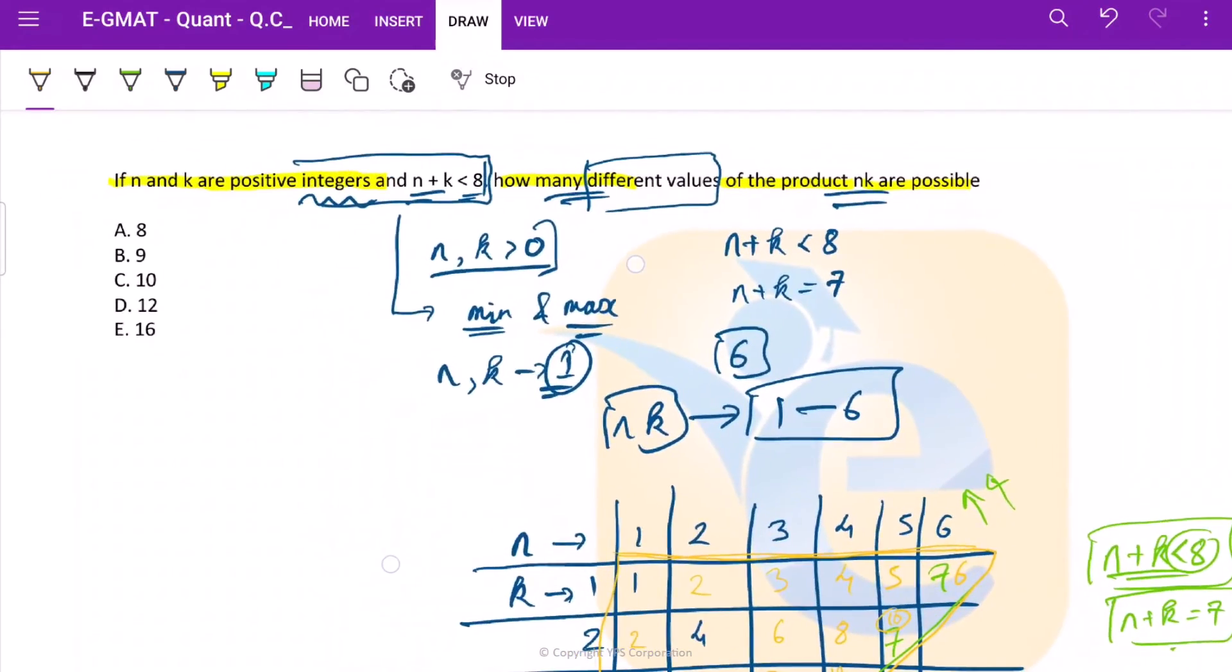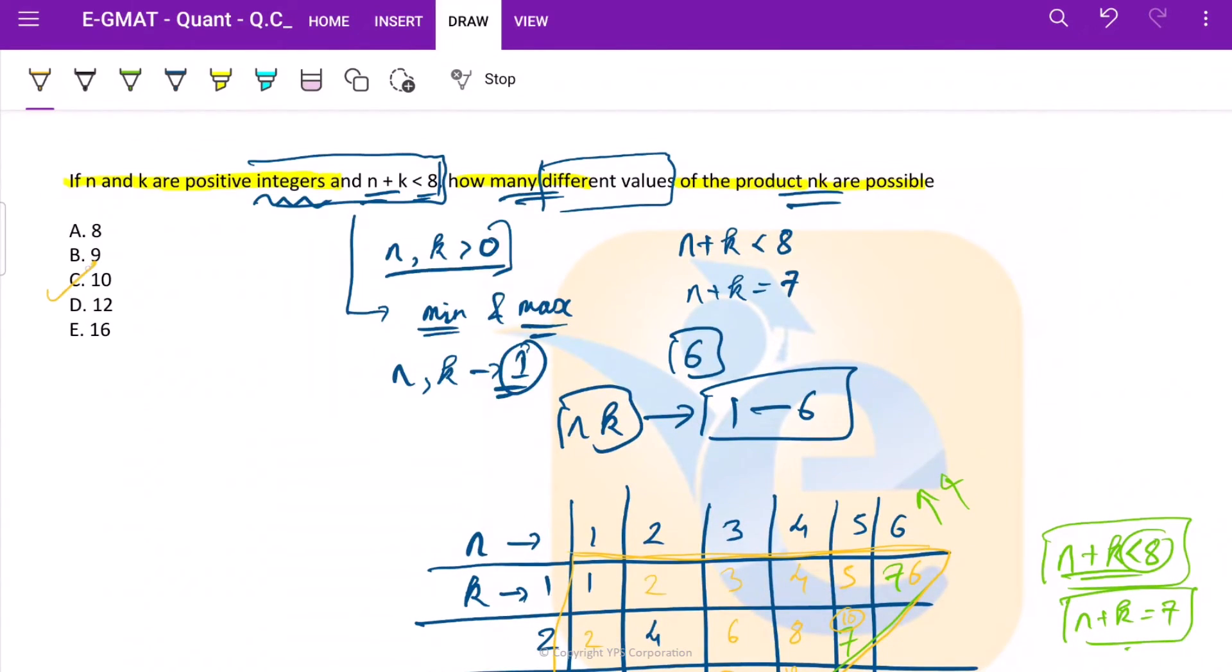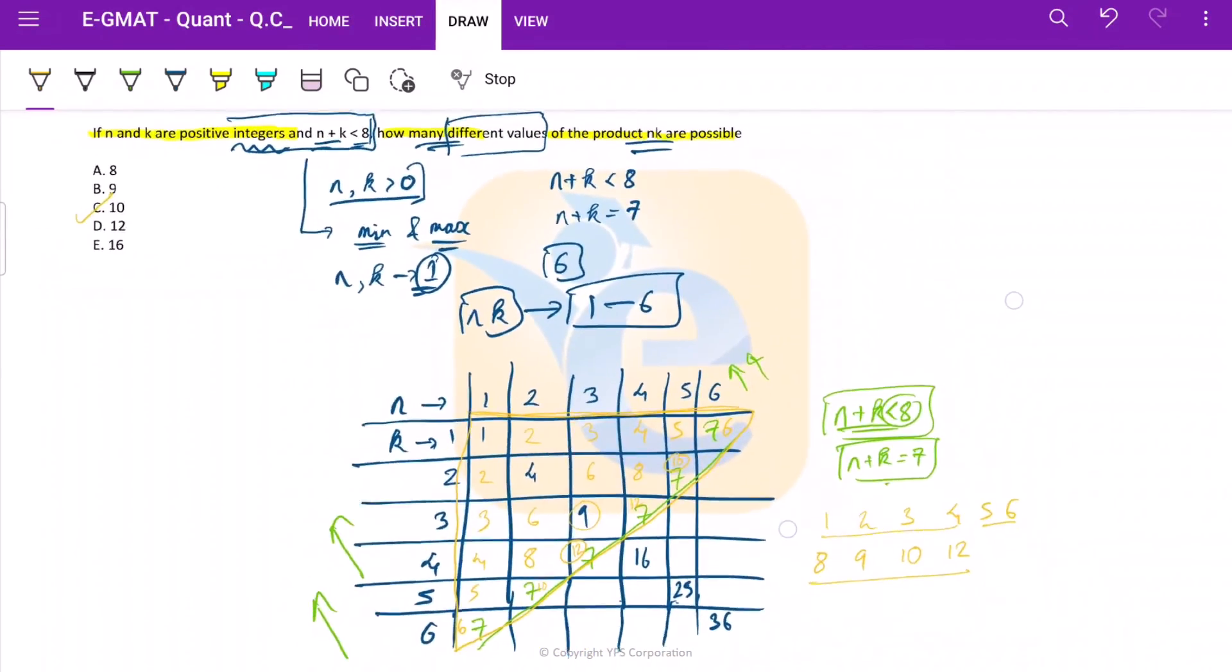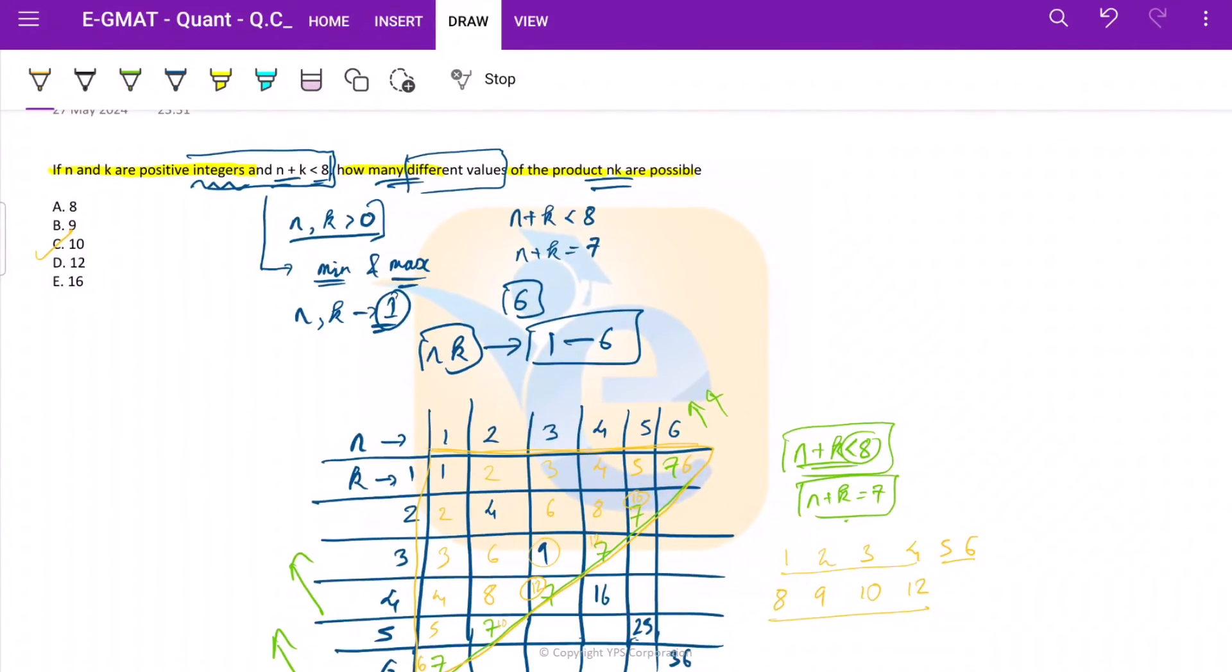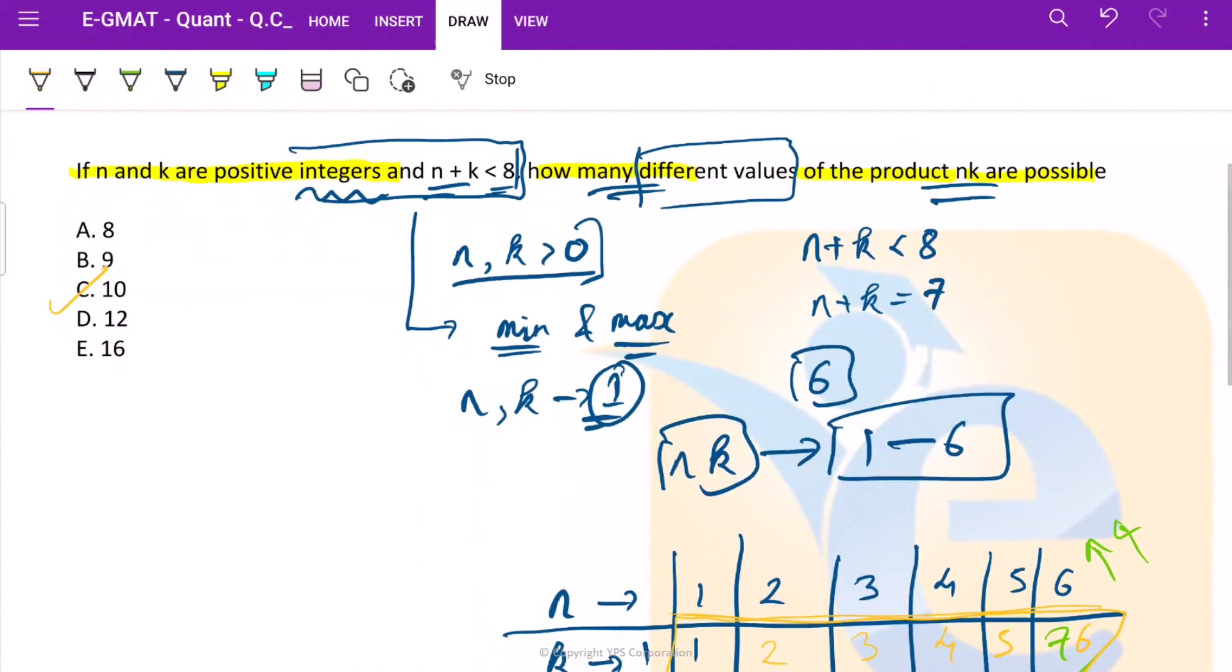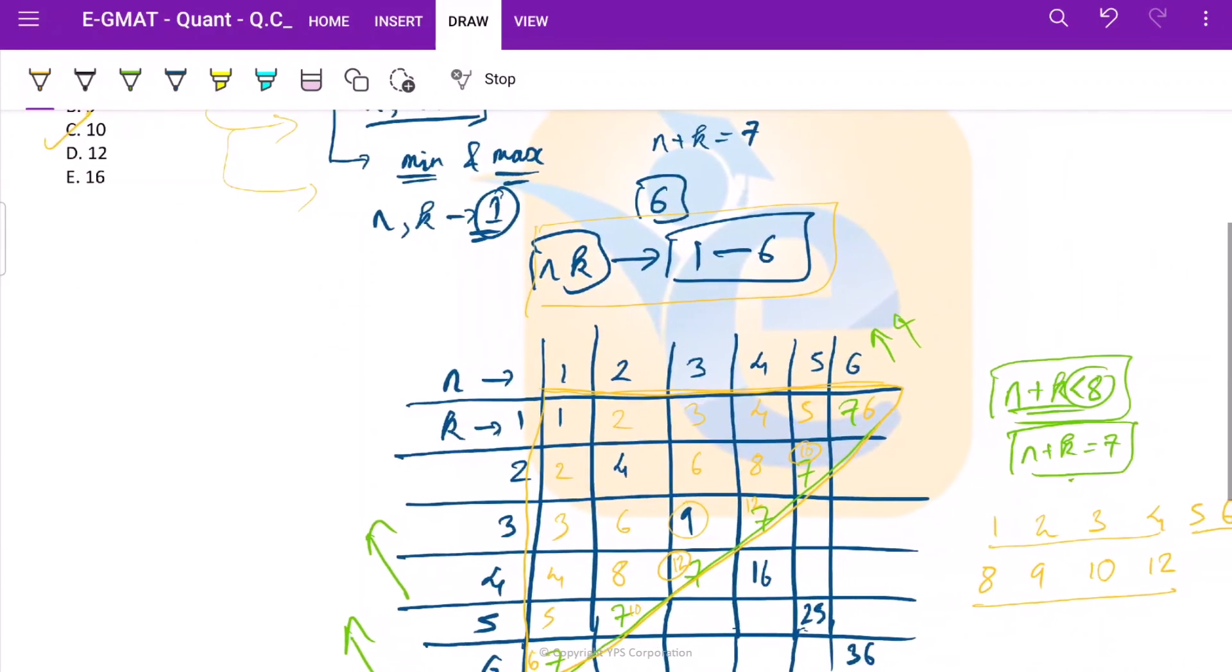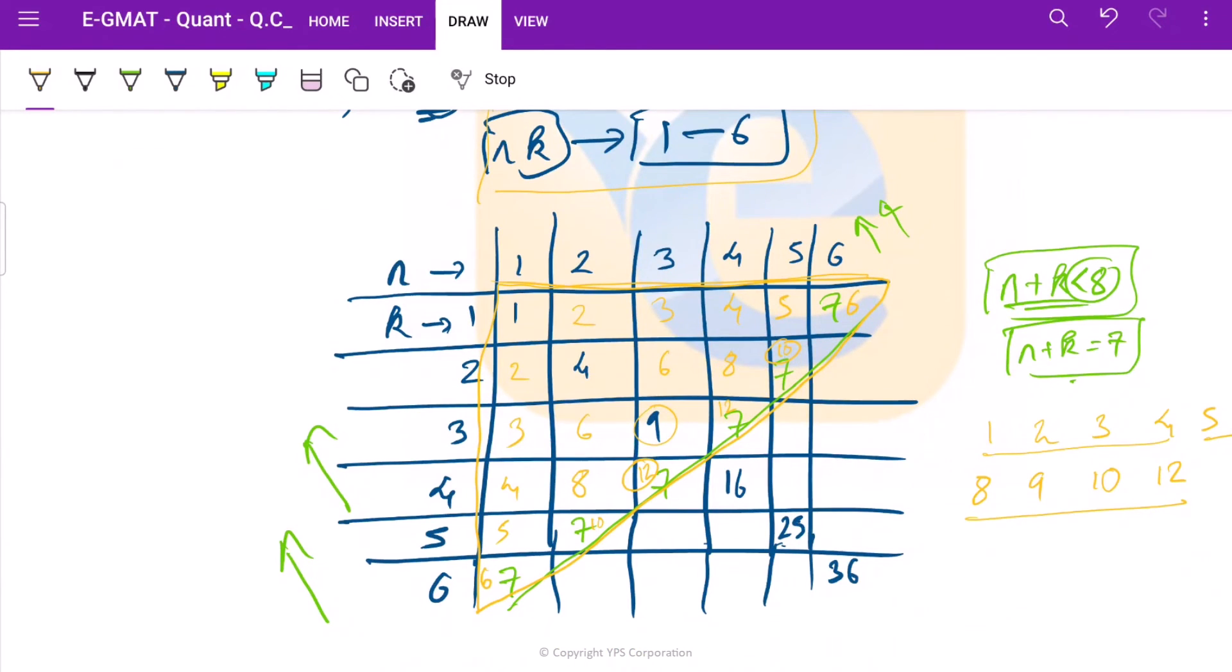So if we go back and see our solution. So 10 is our answer. So what did we do here? Let us quickly get back and see what all things are important. The first thing that is important is to take out active inferences. That is what we did. And we were able to understand the range of values for n and k between 1 and 6.